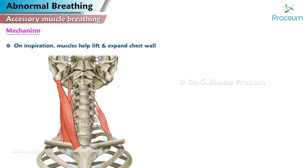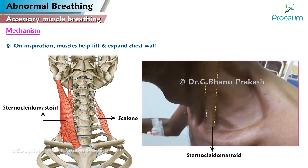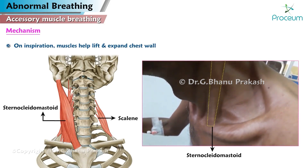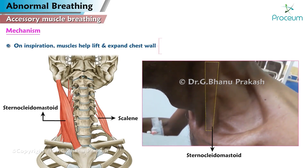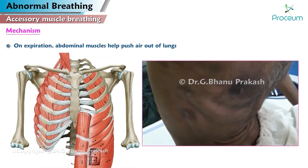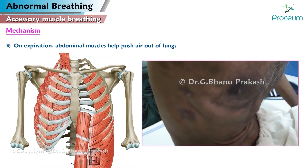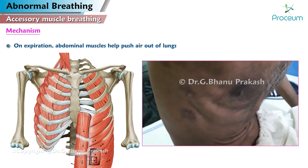On inspiration, the scalene and sternocleidomastoid muscles help lift and expand the chest wall, allowing for a decrease in intrathoracic pressure and increased air entry. On expiration, the abdominal muscles help push air out of the lungs.